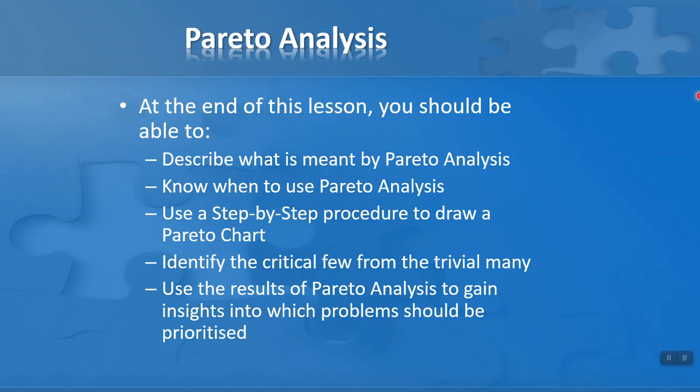The objectives for this lesson: at the end of the lesson we should be able to describe what is meant by Pareto analysis, know when to use Pareto analysis, and use a step-by-step procedure to draw a Pareto chart. We then want to identify the critical few from the trivial many — this is the main thing we want to do in Pareto analysis. Finally, we want to use the results of Pareto analysis to gain insights into which problems should be prioritised.